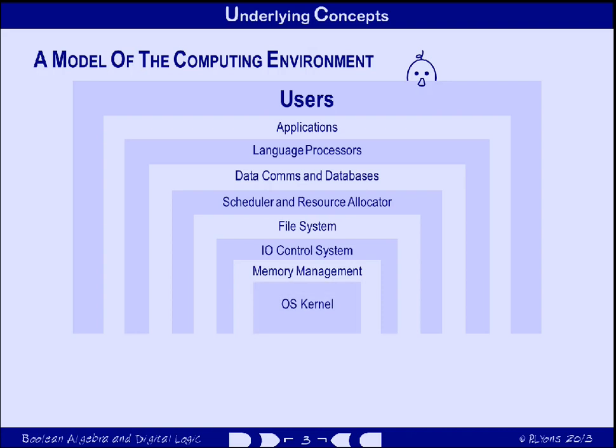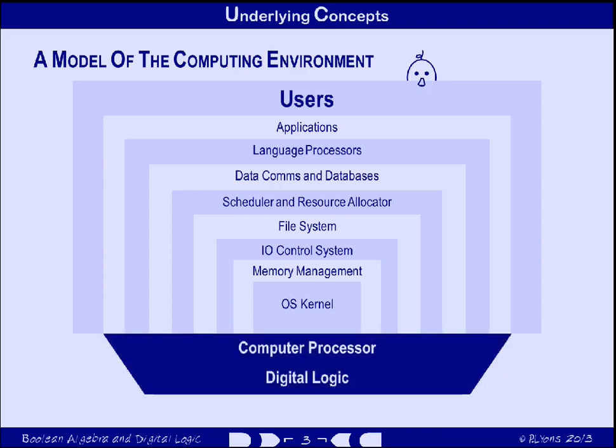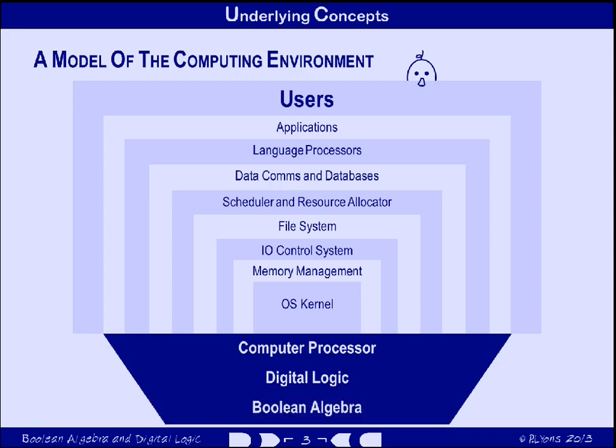The operating system kernel is software that coordinates the behaviour of all the other parts. Now, all of those things are software — they aren't part of the processor. The processor is underneath all of these. It's made out of digital logic — that's the specialised type of electronics that we'll be talking about during this course. And the digital logic, in turn, is based on a mathematical construct called Boolean algebra. So, in this section of the course, we'll be looking at these three items at the bottom of the diagram: none of the software, just the hardware, and the underlying mathematical theory that makes the hardware easy to design.